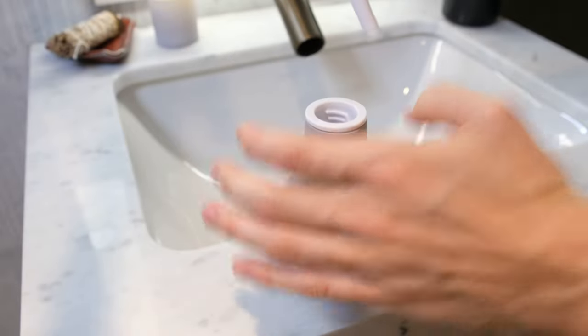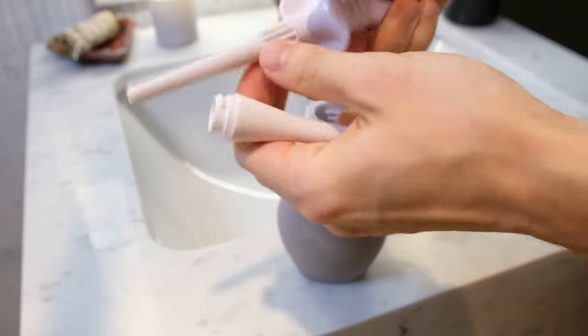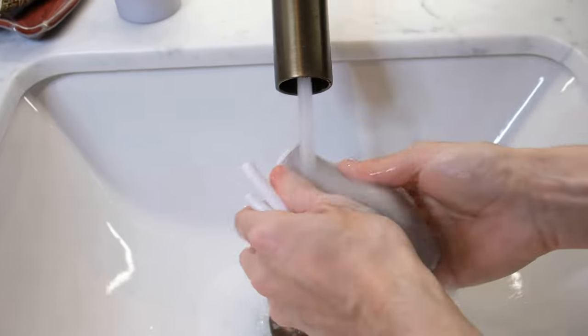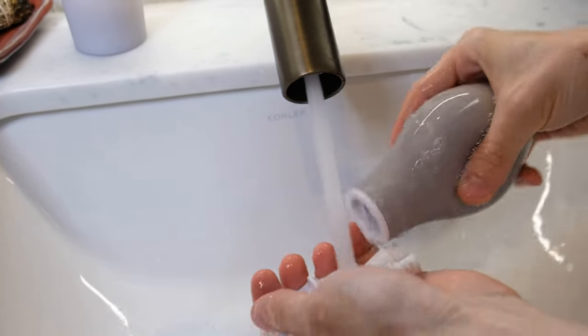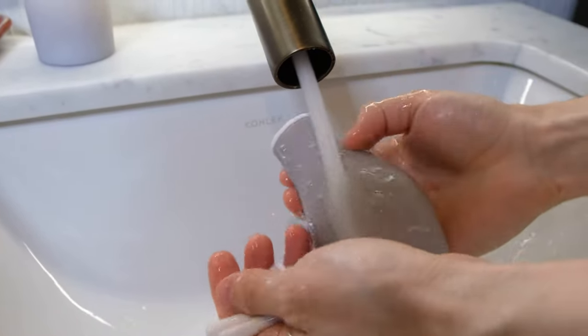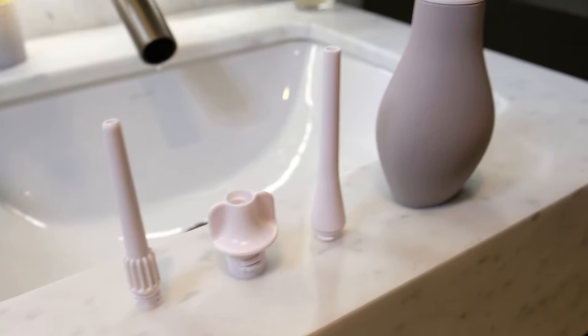For a deeper clean, remove all the parts and disassemble Dew. Then use hot soapy water to clean all the parts. Be sure to never use harsh chemicals or solvents. Let the parts dry separately overnight.